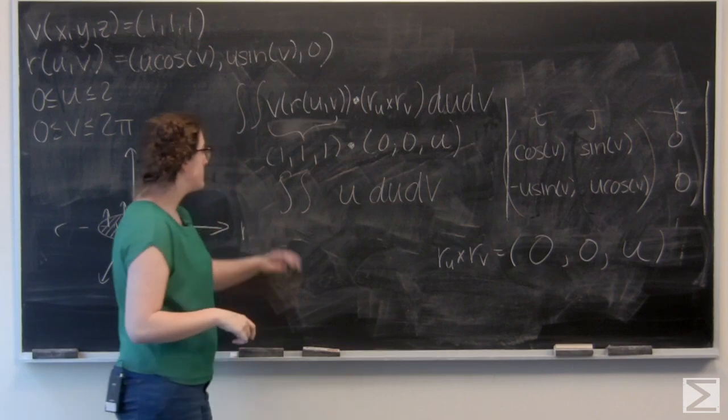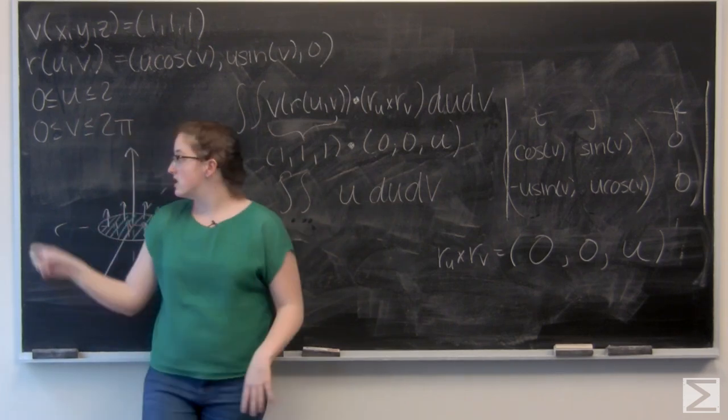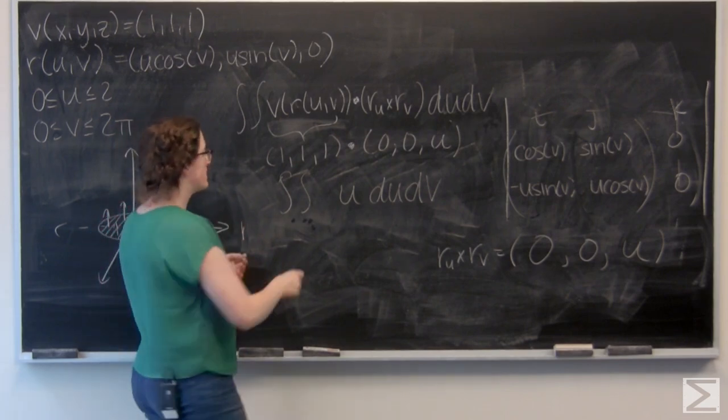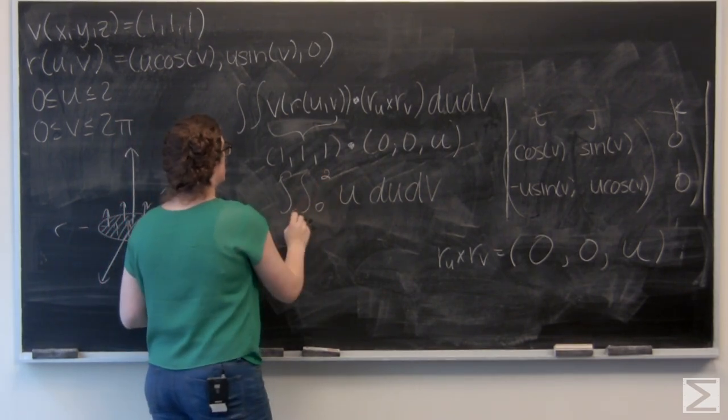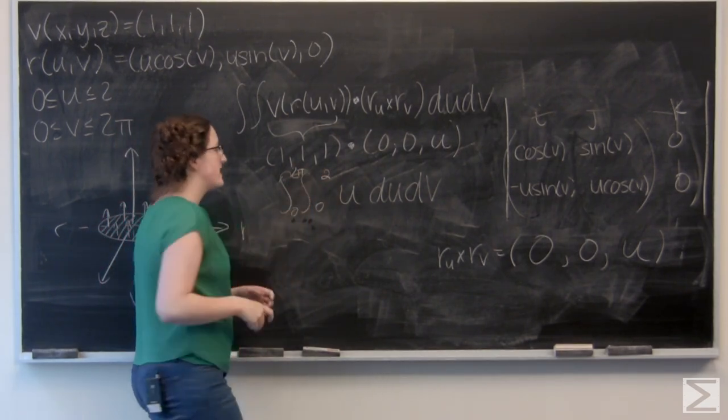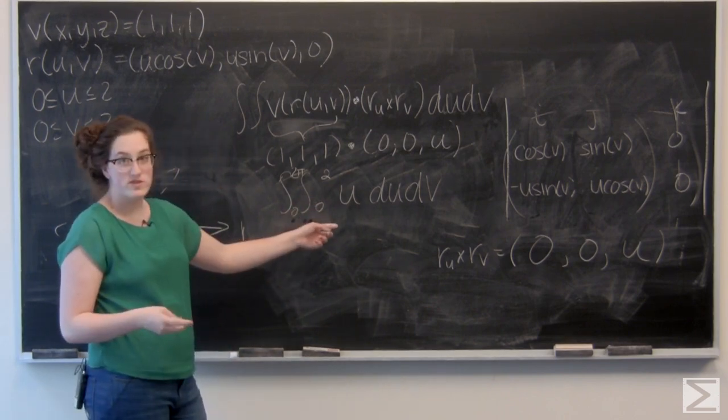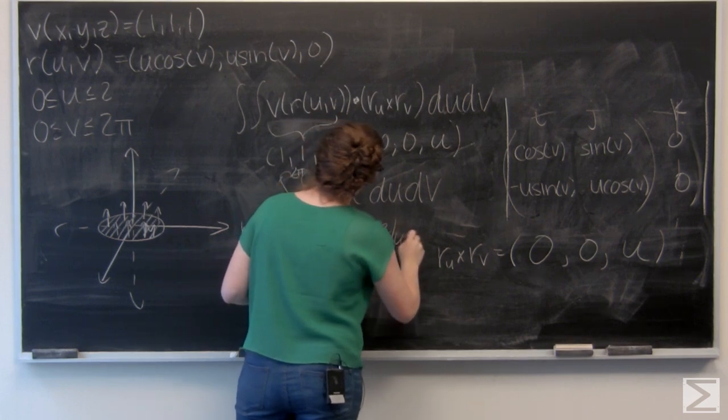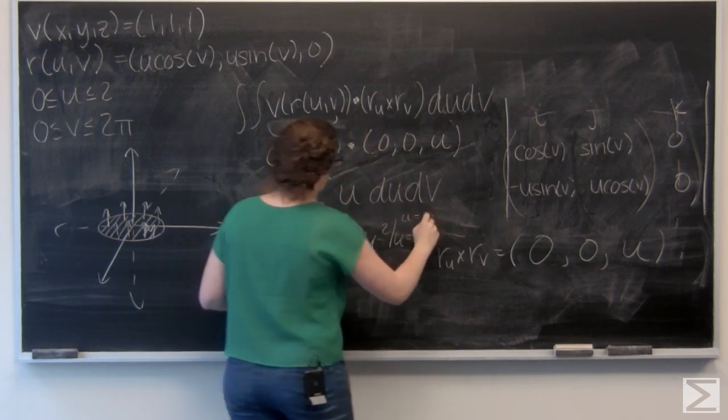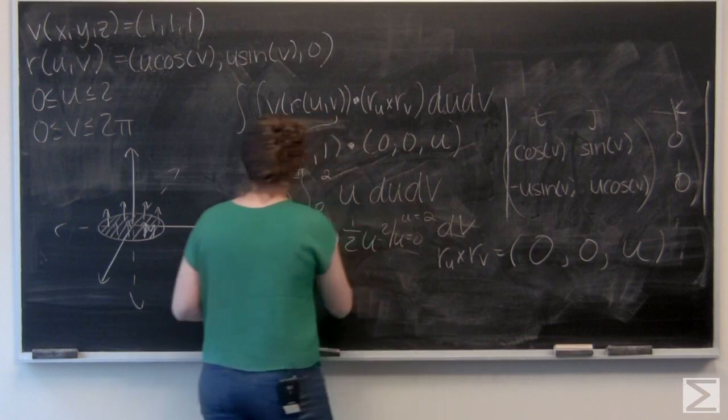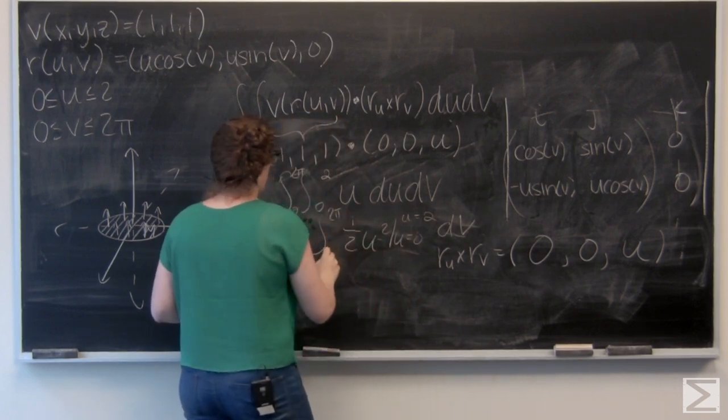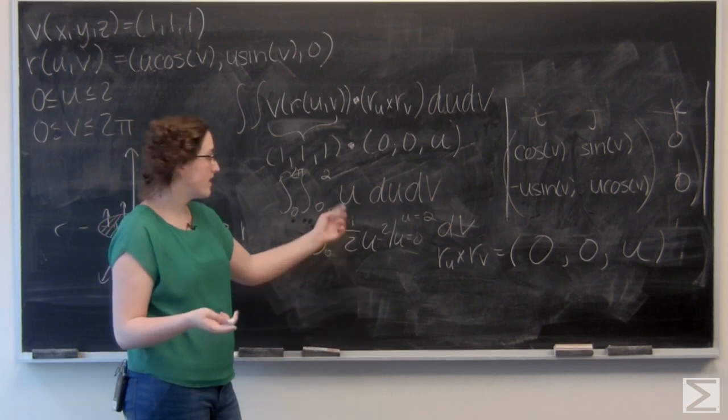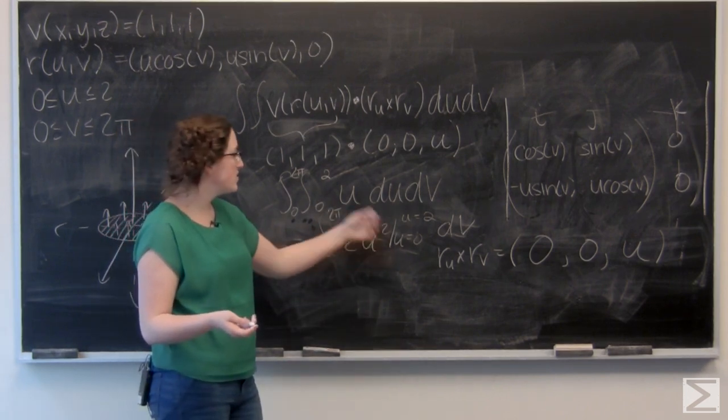And now I'm ready to integrate that. And my bounds of integration just match the boundaries for u and v that I was given in the problem. So I'm going to integrate with respect to u first, and then v. So the integral of u is going to be 1 half u squared. And when I plug in 2, I'm going to get 2, right, 1 half times 4. Then when I plug in 0, I just get 0.